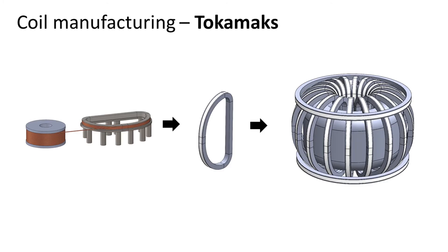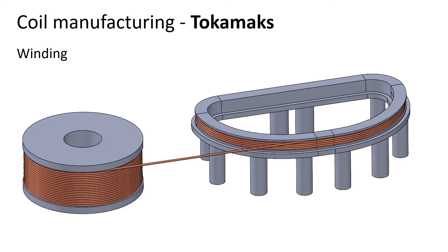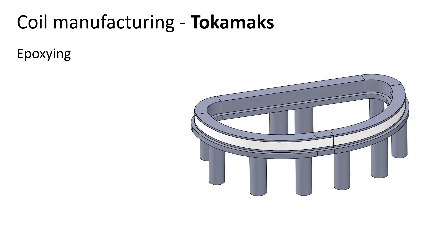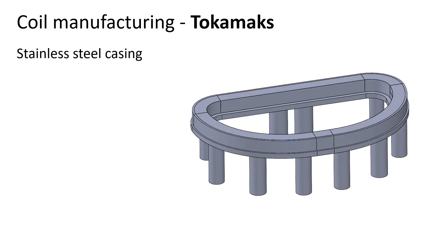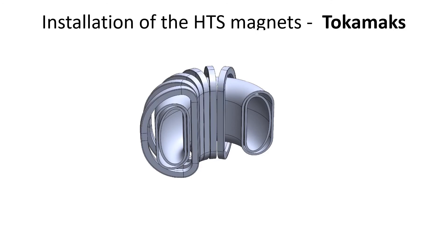Tokamak magnets are less complicated than stellarator magnets thanks to the simpler geometry of the tokamak. The same three-step process is followed to make the tokamak magnets while winding the tape or the cable on a much simpler form. The magnets are then mounted on the tokamak vessel.